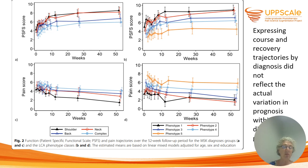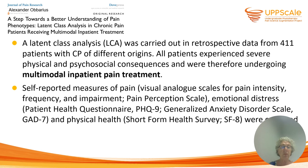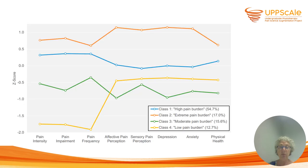So it seems like phenotyping helps us better understand what happens with patients over the course of treatment. In yet another study, 411 patients with chronic pain of different origins were followed. They all had severe physical and psychosocial consequences of their pain and were undergoing multimodal pain treatment. A number of self-reported measures of pain were used, including emotional distress and physical health, and four different phenotypes were described.